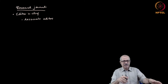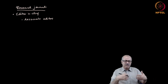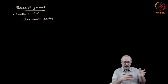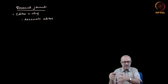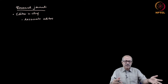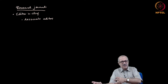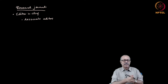In every field like physics, chemistry, and biology there are also field-specific journals. For example, in physics we have the Physical Review class of journals: Physical Review Letters, Physical Review A, B, C, D, E, and journals published by the American Institute of Physics (AIP). There are also journals published by other publishers and by the academies of our country, so there are a number of journals in the field of physics.